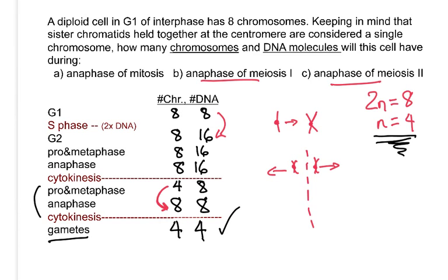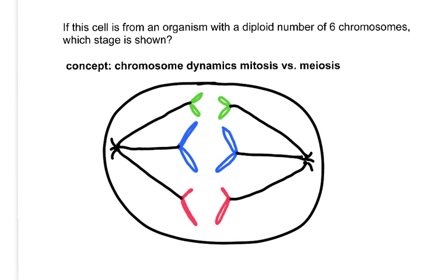At the end of meiosis, gametes have the haploid number of four chromosomes — a good check on your work. So the answers are: anaphase of meiosis I has 8 chromosomes and 16 DNA molecules, and anaphase of meiosis II has 8 chromosomes and 8 DNA molecules.